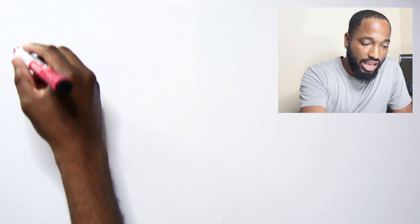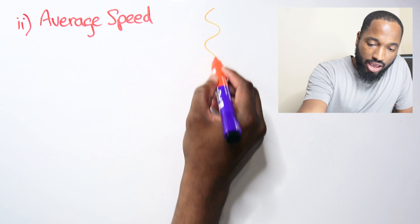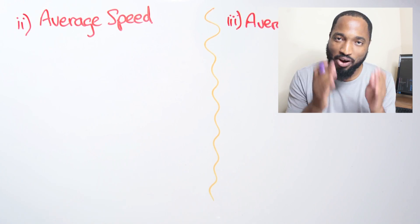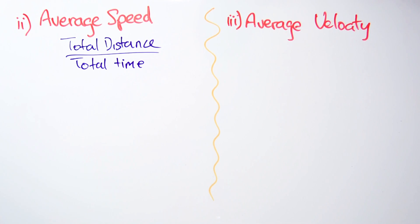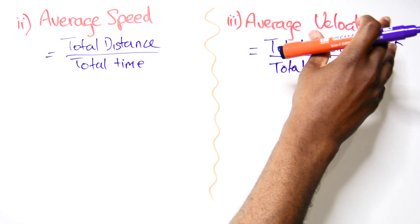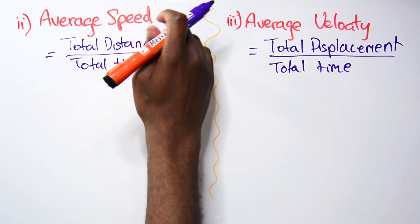The next two parts ask us to determine average speed and average velocity. From your revision you should know that average speed equals total distance over total time, but average velocity equals displacement over time. One uses distance and one uses displacement - vector quantities where direction is important versus scalar quantities where direction is not important.